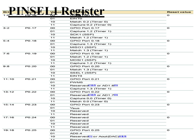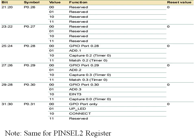PINSEL1 covers Port 0.16 to Port 0.31, and PINSEL2 is dedicated to Port 1.16 to Port 1.31. The overall purpose of the PINSEL register is to select the operating mode of a single pin — whether it works as GPIO, transmitter, receiver, PWM, or any other function.